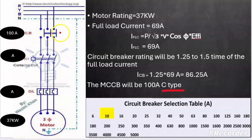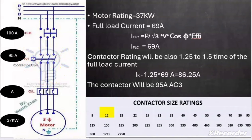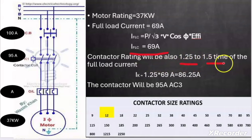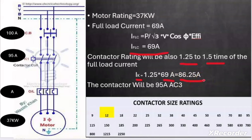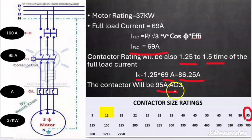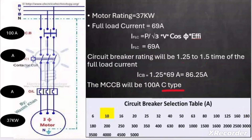After calculating the circuit breaker rating, let us calculate the contactor rating. The full load current of the motor is 69 ampere. The contactor rating is also 1.25 to 1.5 times the full load current, so 1.25 × 69A = 86.25A. The next available standard size of contactor is 95 ampere, so we select a contactor rated 95 ampere, AC3 type. AC3 is a utilization category for contactors, similar to how C type classifies MCCBs.